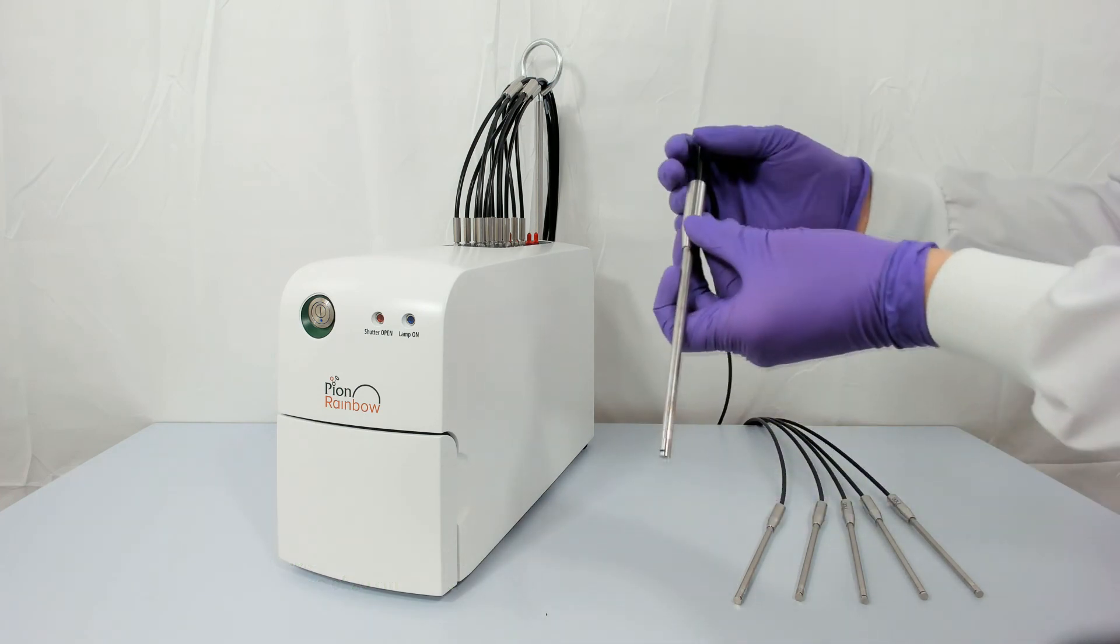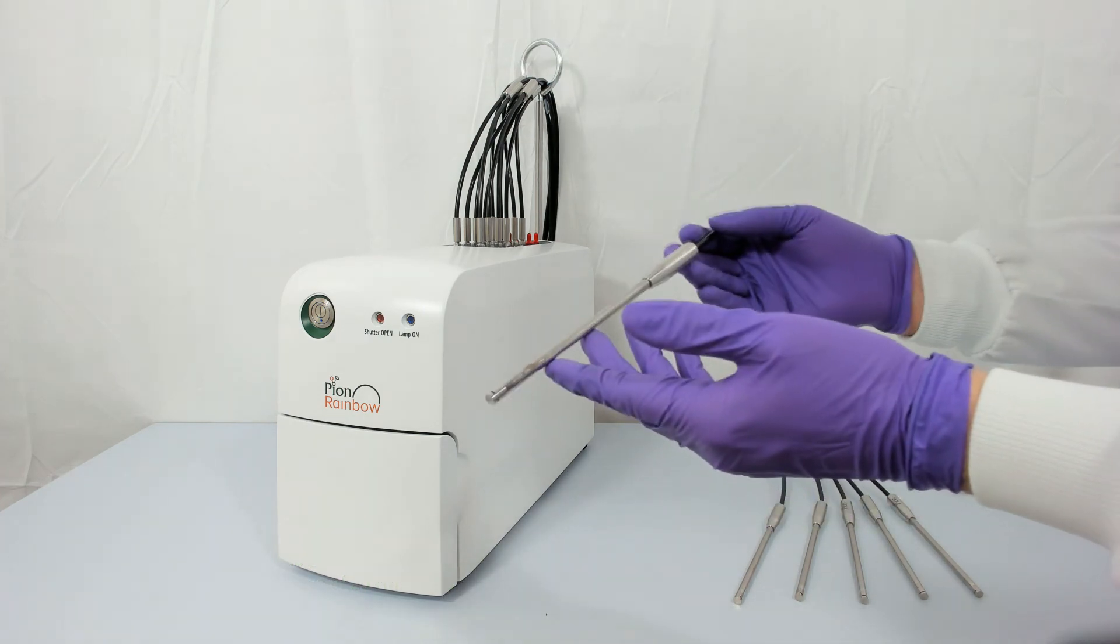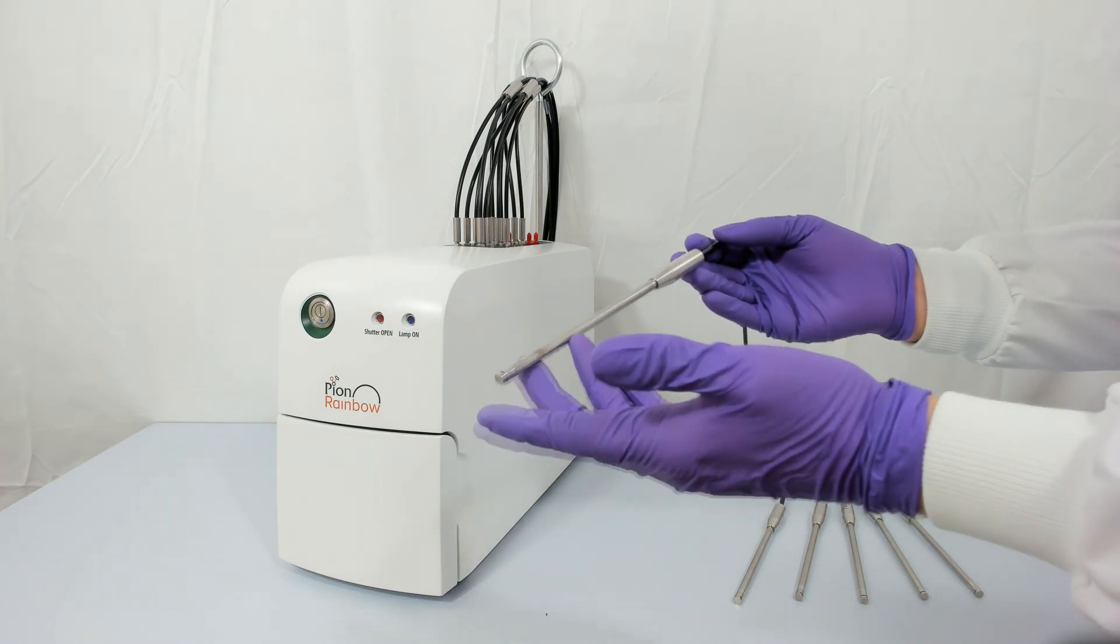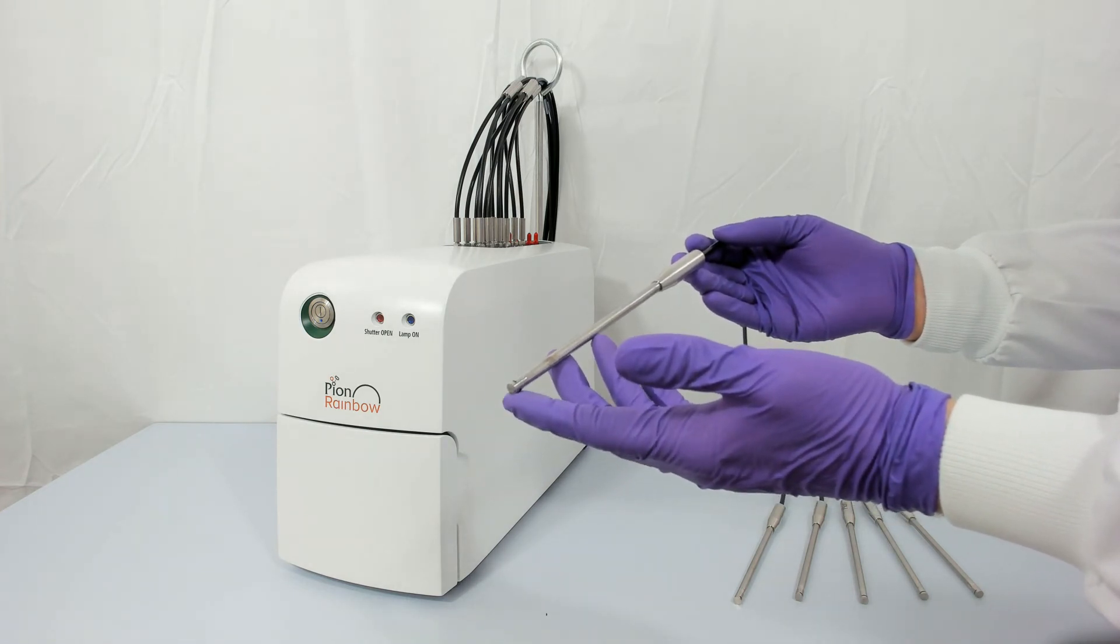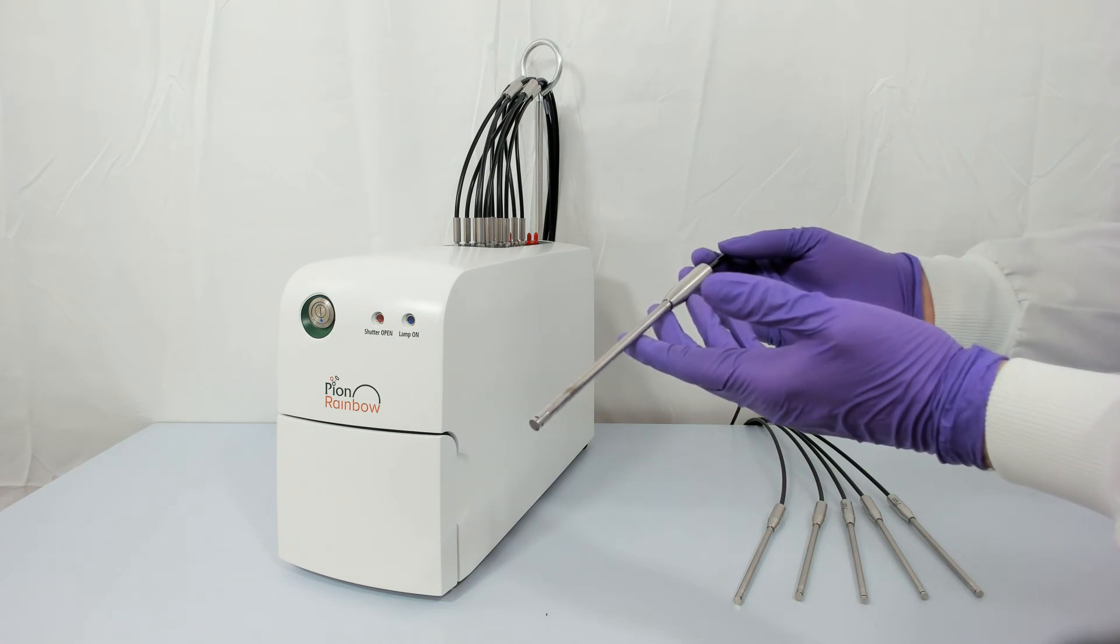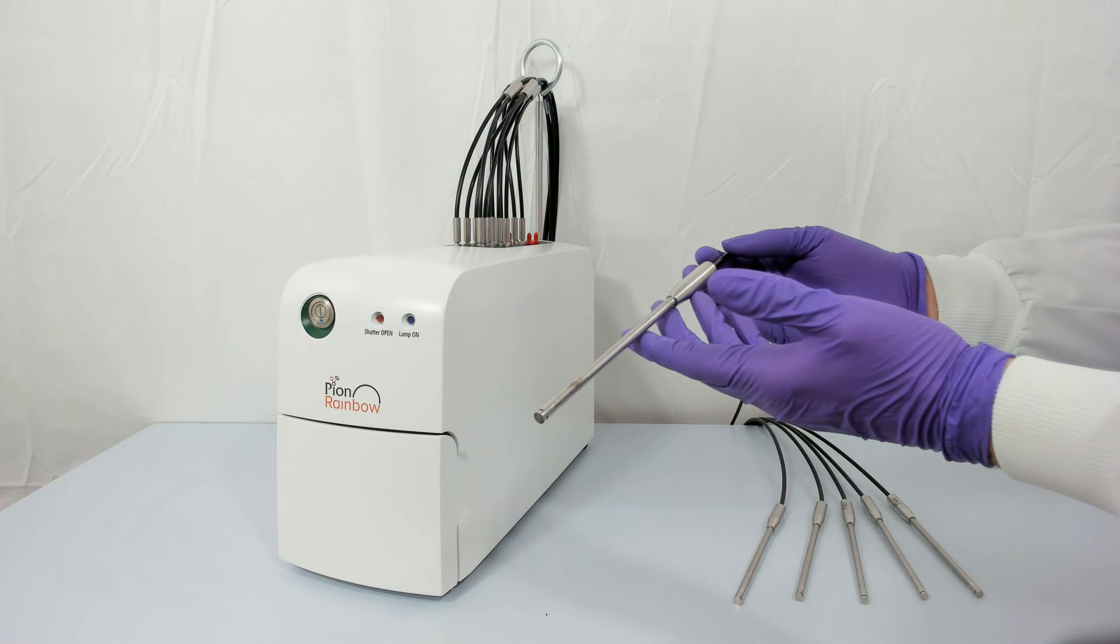At the end of the fiber optic cable is the metal immersion probe, on the end of which is a screw fitting for variable path length tips, which are available in 20, 10, 5, 2 and 1 mm lengths.